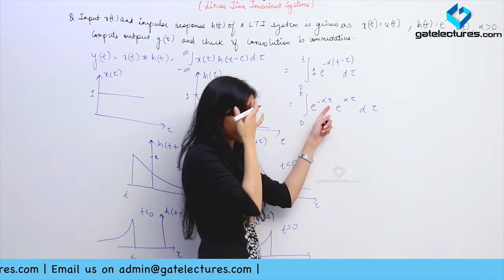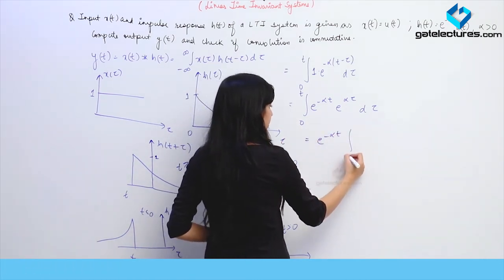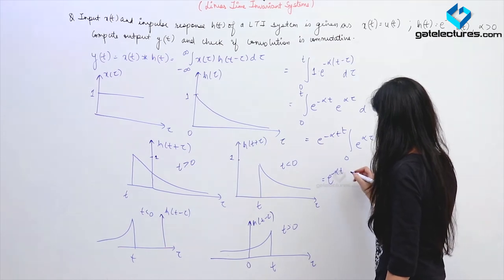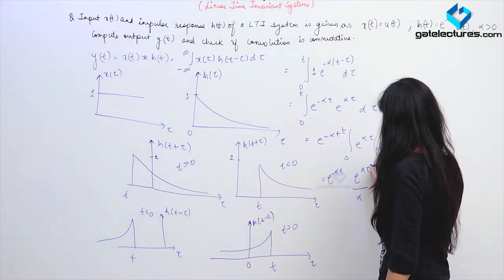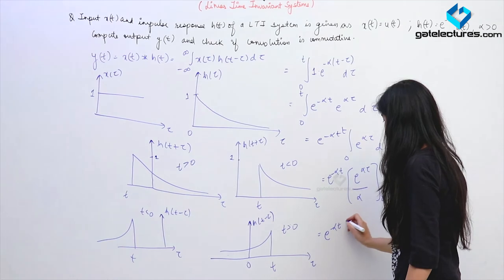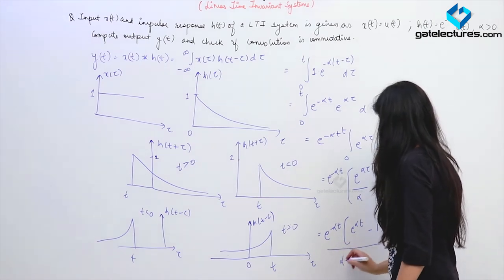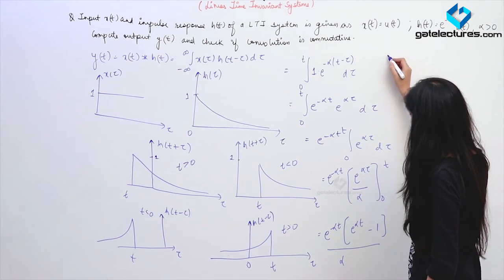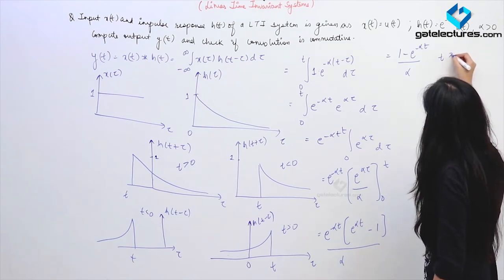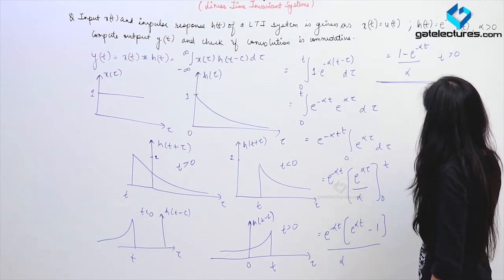Since e^{−αT} is not a function of τ, it can be taken outside the integral. This becomes e^{−αT} · [e^{ατ}/α] from 0 to T. Putting in the limits gives e^{−αT} · (e^{αT} − 1)/α, which simplifies to (1 − e^{−αT})/α for T > 0. This is the final answer for Y(T).